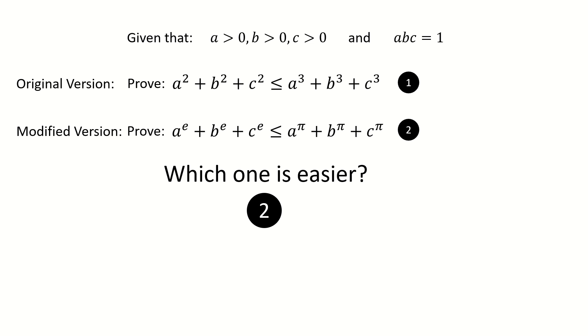Then how can we solve it? If you carefully compare these two versions, you might find some hint. The original version is to prove this inequality for integer powers. But for the modified version, it's asked to prove this inequality for irrational powers. So can we make a guess? Maybe this inequality works for all real numbers.